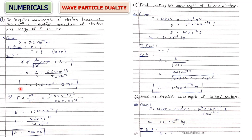When using the energy formula, energy is in joules; if asked in electron volts, divide by 1.6 × 10⁻¹⁹. Second numerical: find de Broglie wavelength of a 10 kilo-electron-volt electron. Energy is given as 10 keV; convert to eV (× 10³), then to joules (× 1.6 × 10⁻¹⁹). Now energy is in joules; use λ = h / √(2mE) to find lambda in meters.